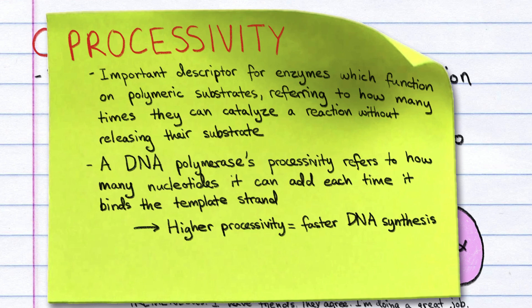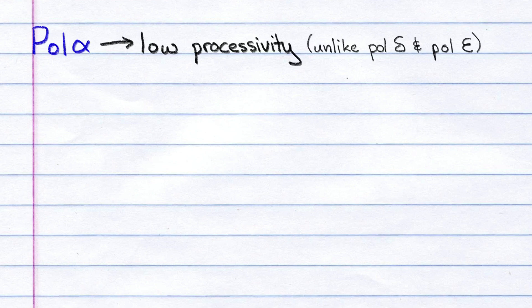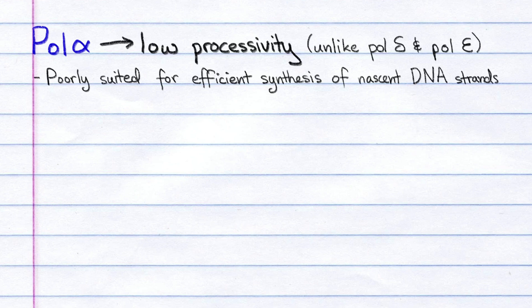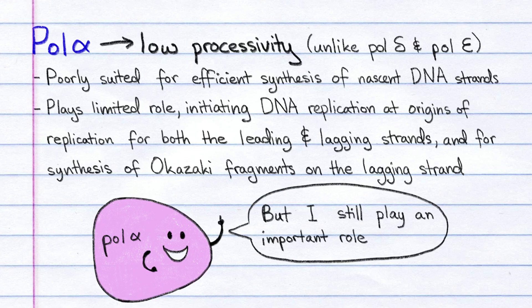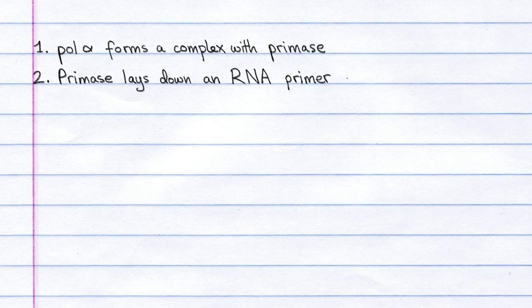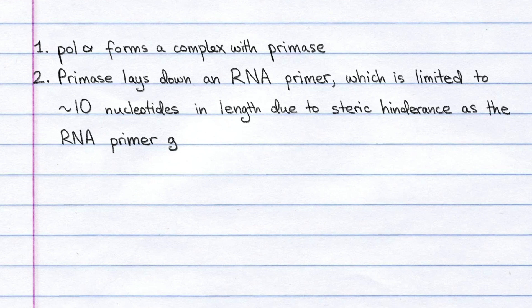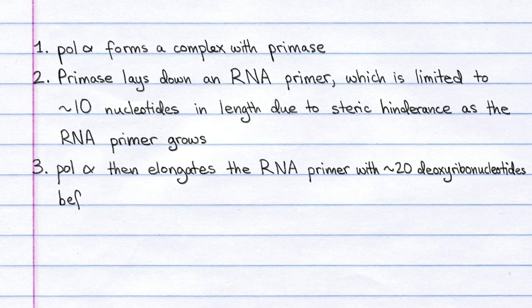Pol-alpha has low processivity, unlike pol-delta and pol-epsilon. Hence, it is poorly suited for efficient synthesis of the nascent DNA strands. Instead, it plays a more limited role, initiating DNA replication at origins of replication for both the leading and lagging strands, and for synthesis of Okazaki fragments on the lagging strand. Pol-alpha forms a complex with primase. Primase lays down an RNA primer, which is limited to around 10 nucleotides in length due to increasing steric hindrance as the RNA primer grows. Pol-alpha then elongates the RNA primer with around 20 deoxyribonucleotides before handing the job off to another DNA polymerase.